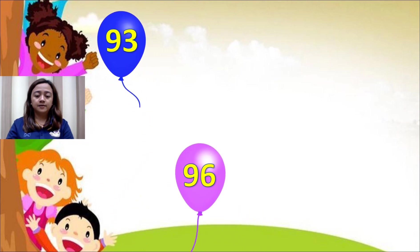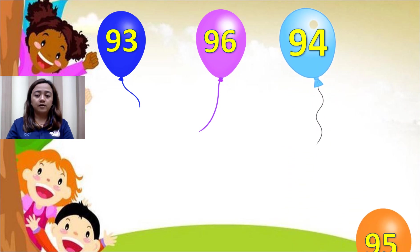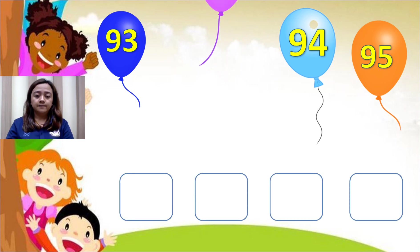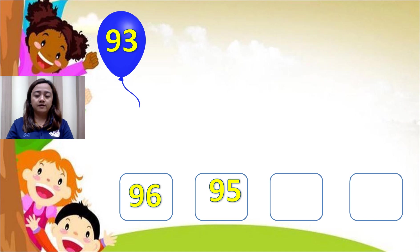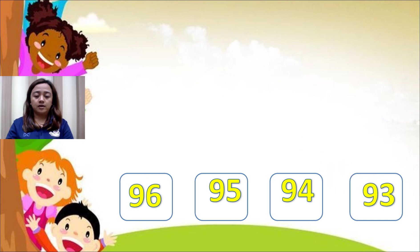Another example: we have 93, 96, 94, and 95. Again, largest to smallest gives us 96, 95, 94, and 93.